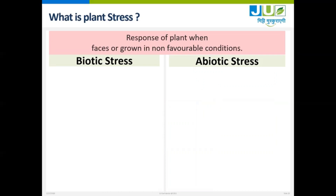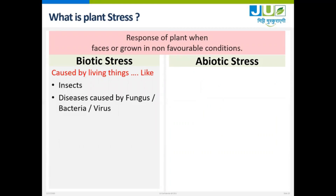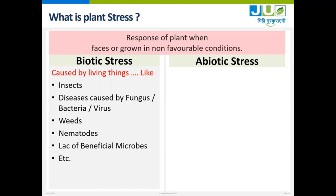First let us talk about biotic stress. It is caused by living things like insects, diseases caused by fungus, bacteria and virus, then weeds, nematodes, and lack of microbial activities or microbes in the soil, and maybe some more which are living and cause stress to the plant.